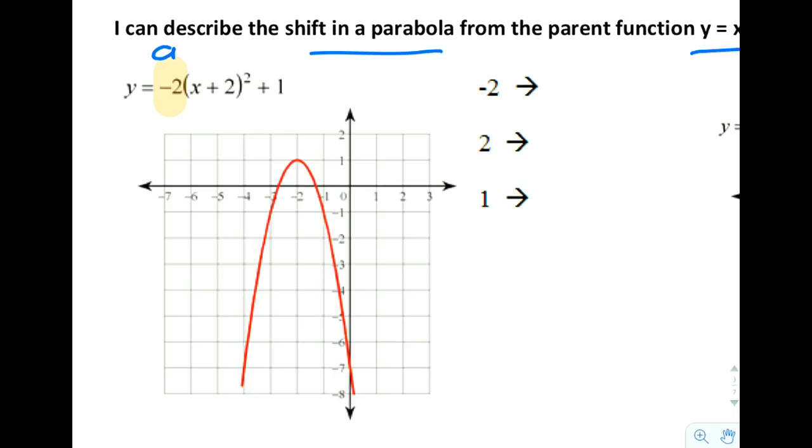That number out front, no matter what form it's written, is always a. It's the stretch factor. The negative says down, so the negative says facing down.